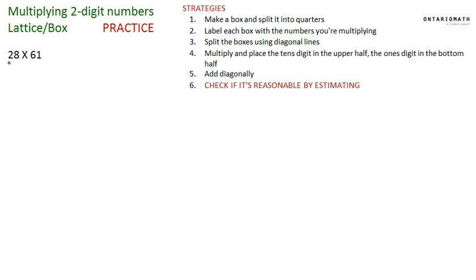I'm going to start with this problem: 28 x 61. Step one, I'm going to make a box and split it into quarters. It kind of looks like a window, and I'm going to label each box.